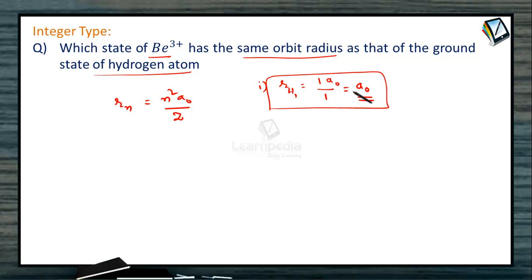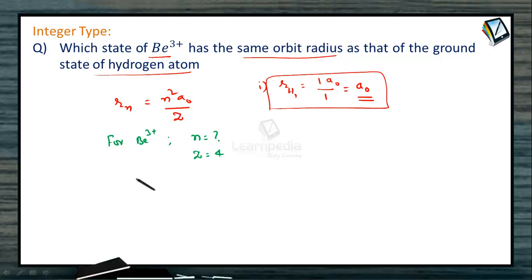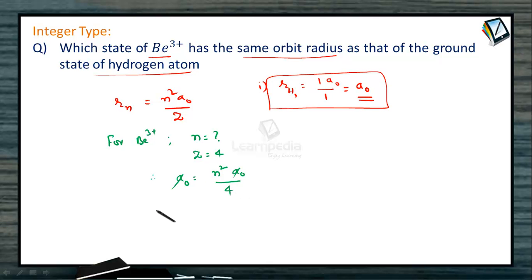We want the same radius in which state of beryllium ion Be³⁺? For beryllium, z = 4, and we need to find n such that the radius equals a₀. So we set a₀ = n² a₀ / 4, and a₀ cancels out.